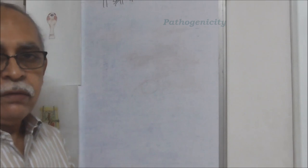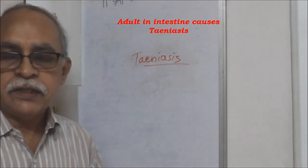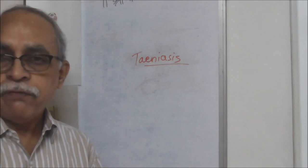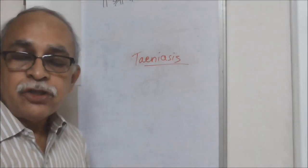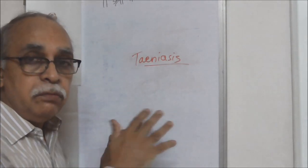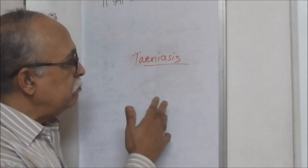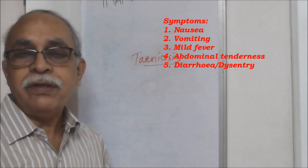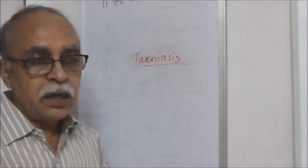When the adult is in the intestine, it causes taeniasis. Inside human beings it can stay alive for a very long span — a few months to a few years in the intestine. Even if proglottids are detached, new proglottids can form, so it keeps reproducing. Taeniasis is a relatively benign disorder with minor symptoms like nausea, vomiting, mild fever, abdominal tenderness, diarrhea, and dysentery. It is rarely fatal.